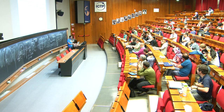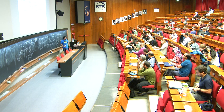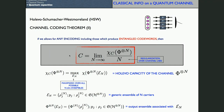Similarly, you can compute the full CQQ capacity. By the Holevo-Schumacher-Westmoreland theorem, the full capacity C can be obtained as a regularized version of C1: you take N applications of the channel, compute the Holevo capacity of this N-fold channel, divide by N, and take the limit as N goes to infinity.